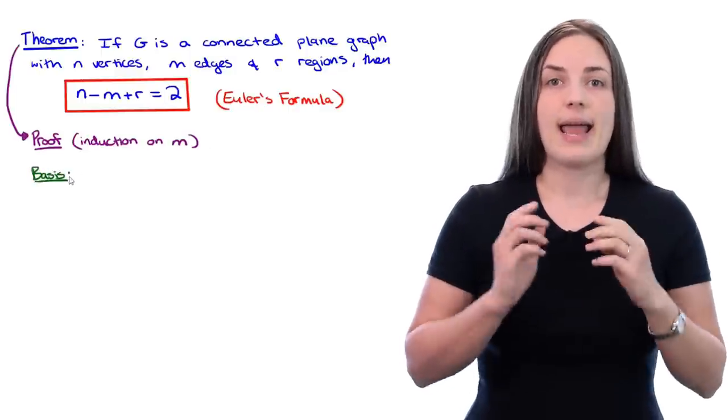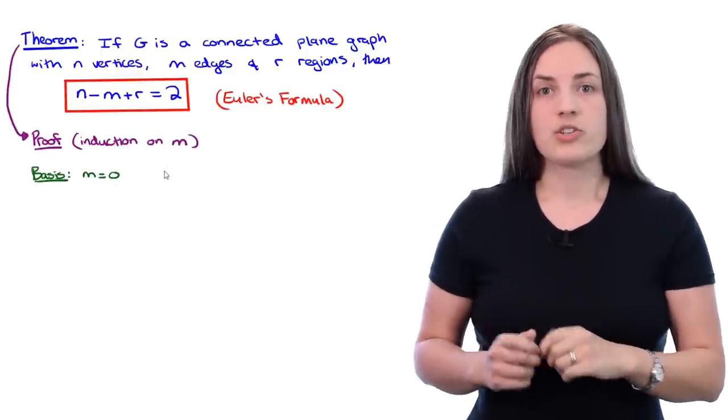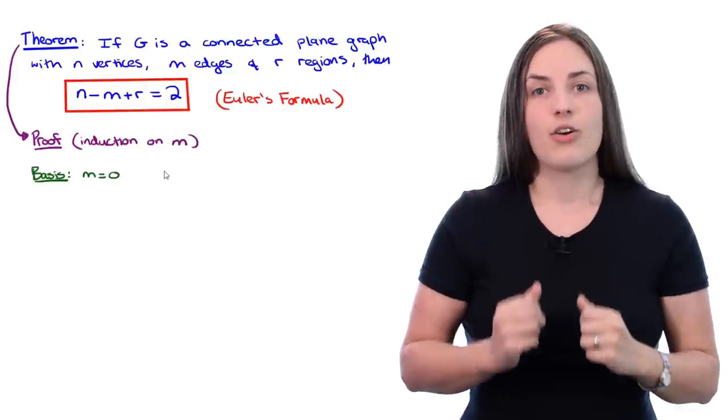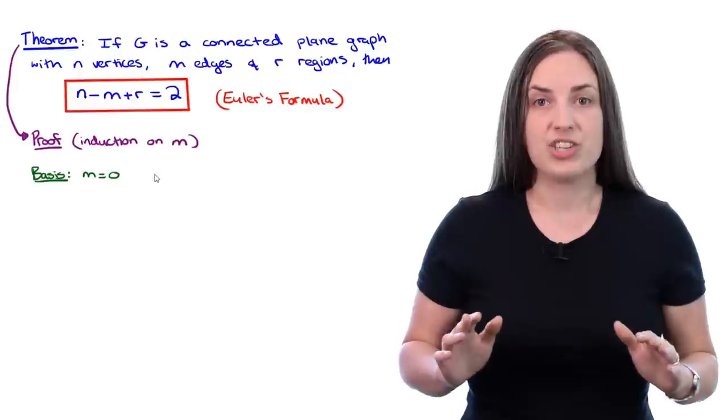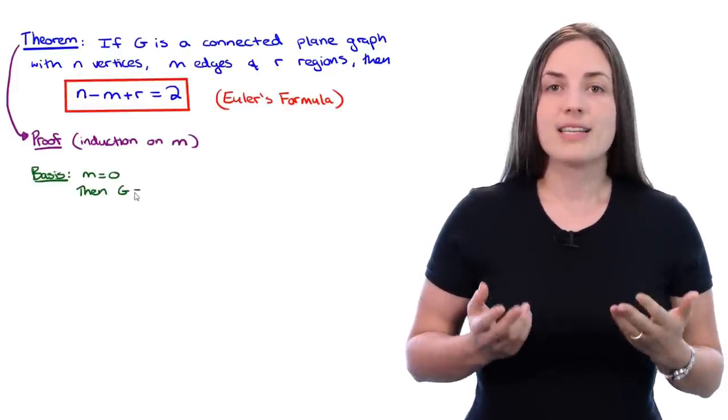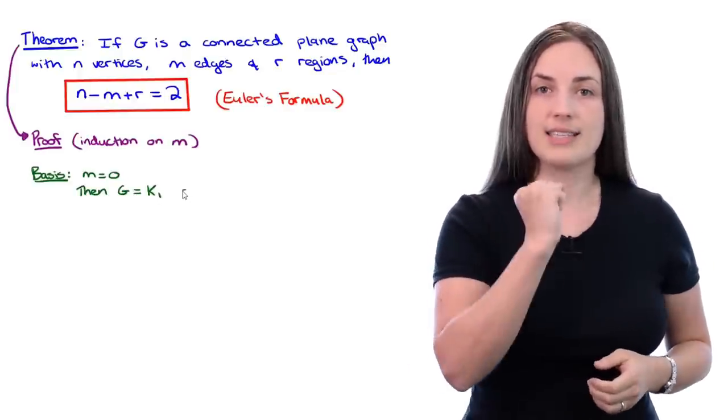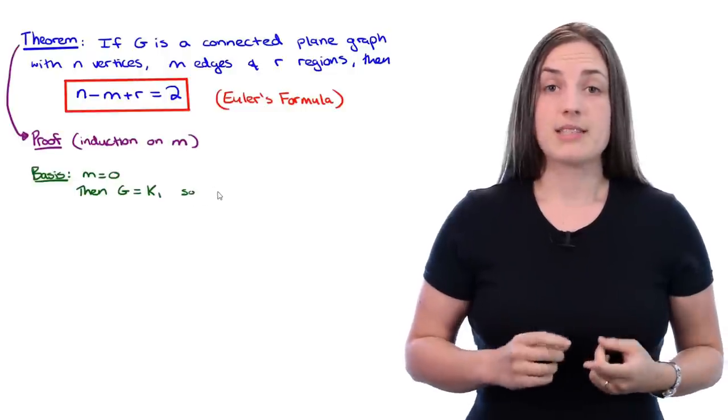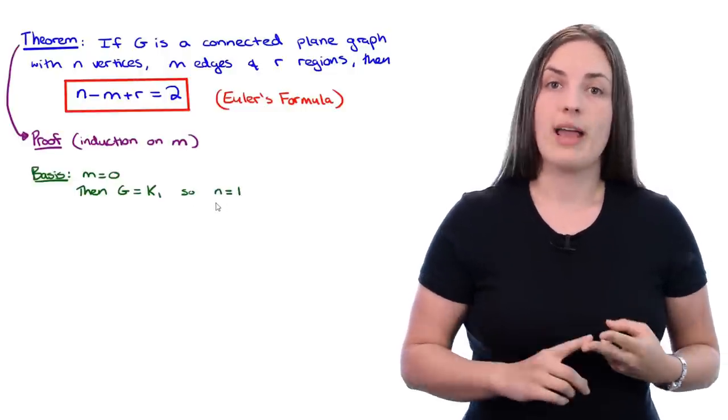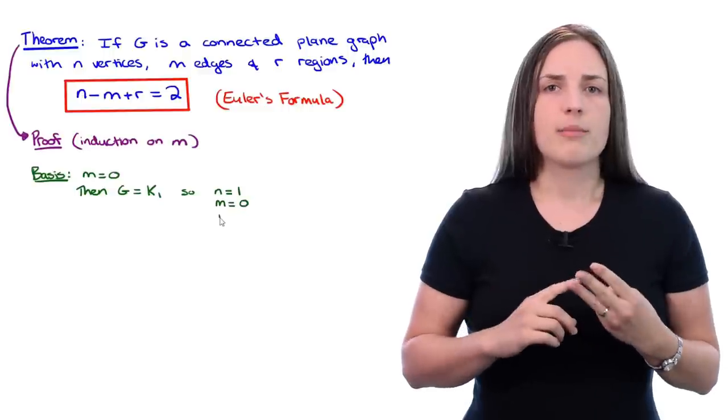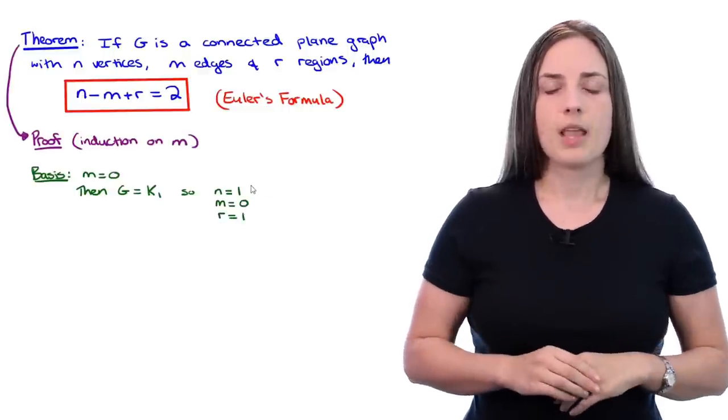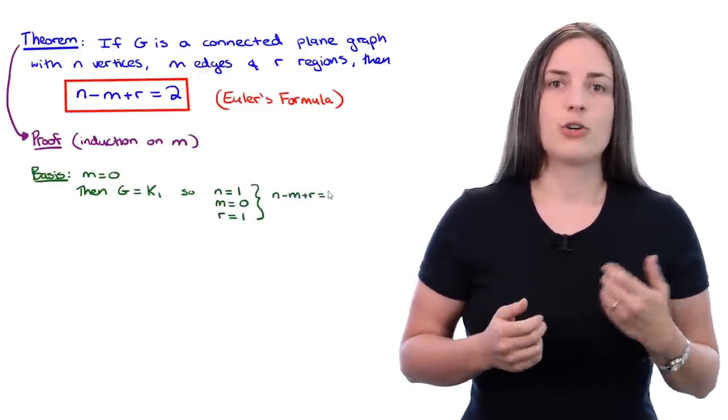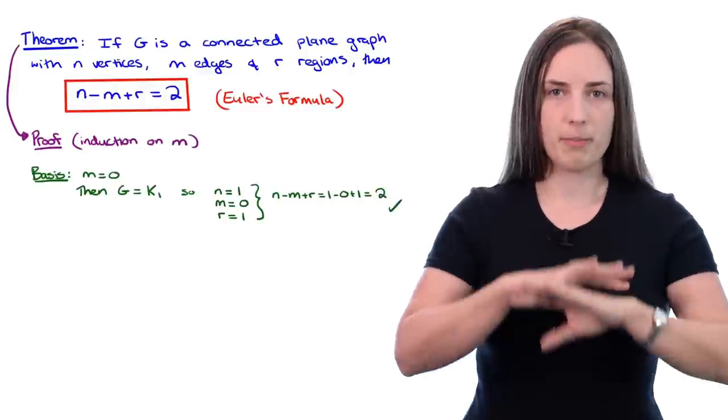The base case is when M equals zero. So you have a connected plane graph on no edges. That means the graph must be K1, just the isolated vertex. So N is equal to one, M is zero, and R is one. Clearly, one minus zero plus one equals two, so the base case is done.